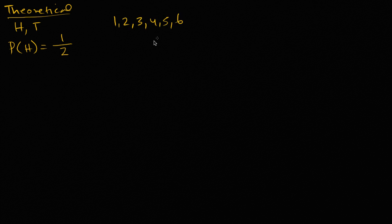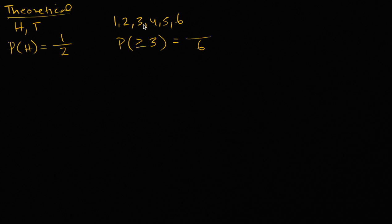One, two, three, four, five, and six. If you ask what is the probability of rolling a result that is greater than or equal to three, we have six equally likely possibilities. In theory, if they're all equally likely, four of these possibilities meet our constraint of being greater than or equal to three. So four out of six — which is the same as two-thirds — is the probability of it happening.